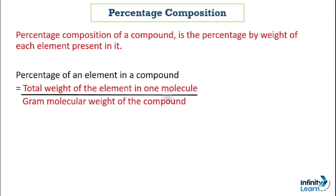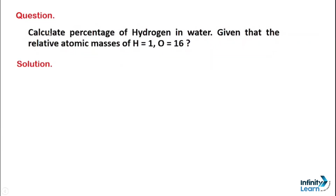Let's learn this through a solution. The question here is: if we have to calculate the percentage of hydrogen in water — how much weight does hydrogen contribute in water? The information already given to us is the relative atomic mass (RAM): hydrogen is 1 and oxygen is 16.